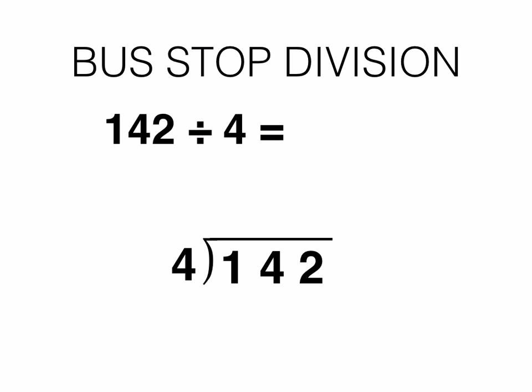Step 2 is calculating how many 4's divide into 1, which of course is 0. You then need to carry the 1 in front of the 4 to make 14, and then calculate how many 4's divide into 14. The answer is 3, which you write above the 4. You then carry the remaining 2 in front of the 2 to make 22, and calculate how many 4's divide into 22.